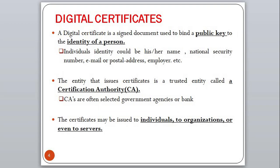A digital certificate is a signed document used to bind a public key to the identity of a person. An individual's identity could be their name, national security number, email address, postal address, employer information, or some combination of these. The entity that issues this certificate is called the certification authority, in short CA. CAs are often a selected government agency or a bank. Certificates may be issued to an individual, an organization, or even to servers.